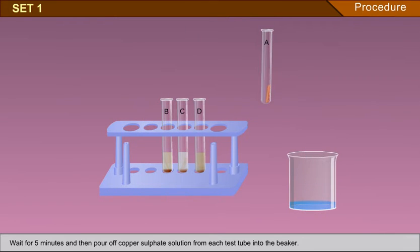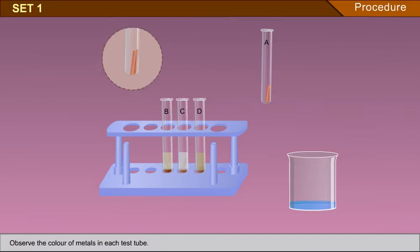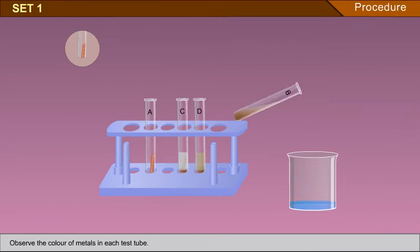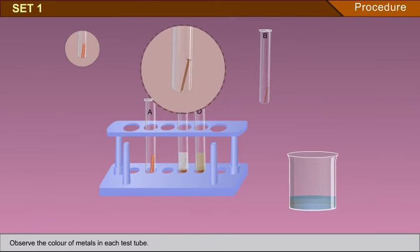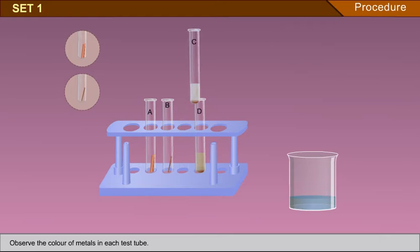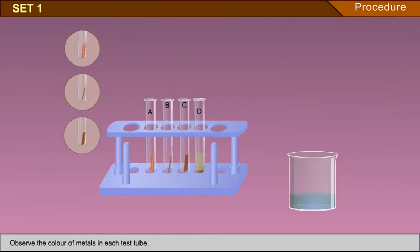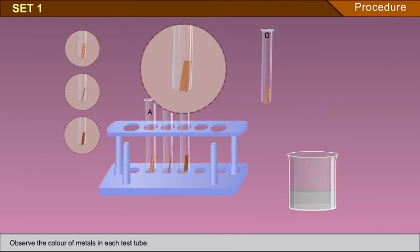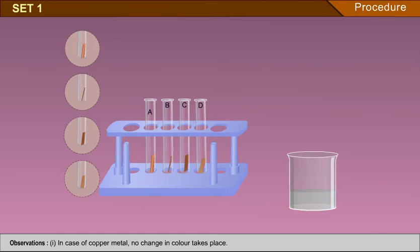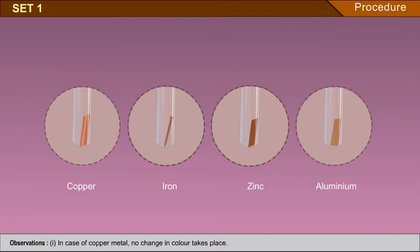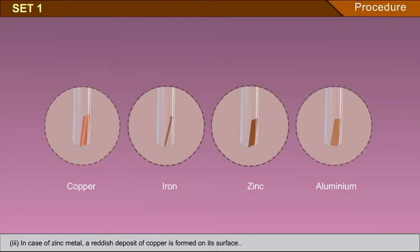Observe the colour of metals in each test tube. In case of iron metal, a reddish deposit of copper is formed on its surface.